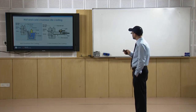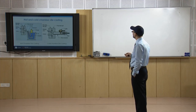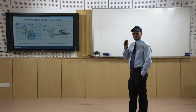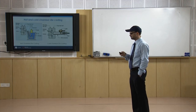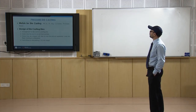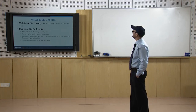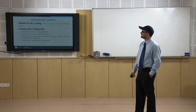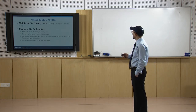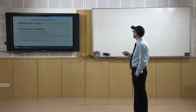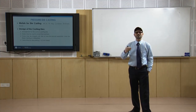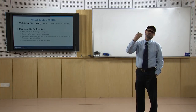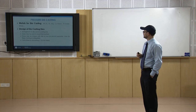The metals typically die cast include zinc, aluminum, magnesium, copper base alloys, tin base alloys, lead, and others. These are all low melting point alloys or materials suitable for casting using die casting machines.